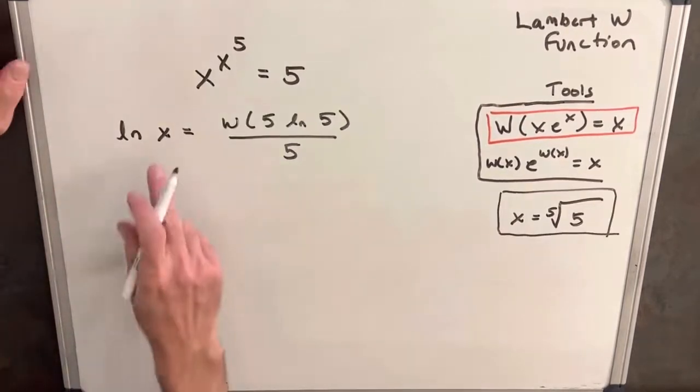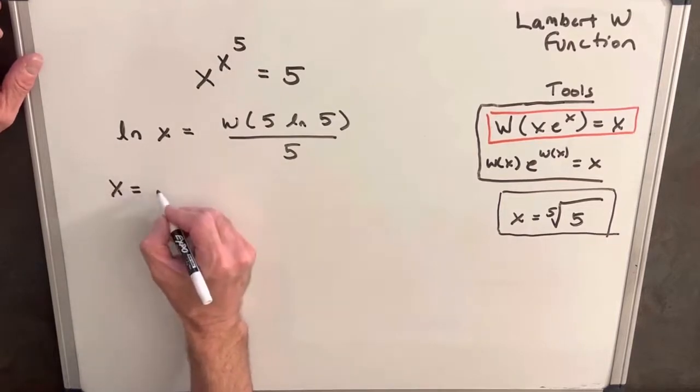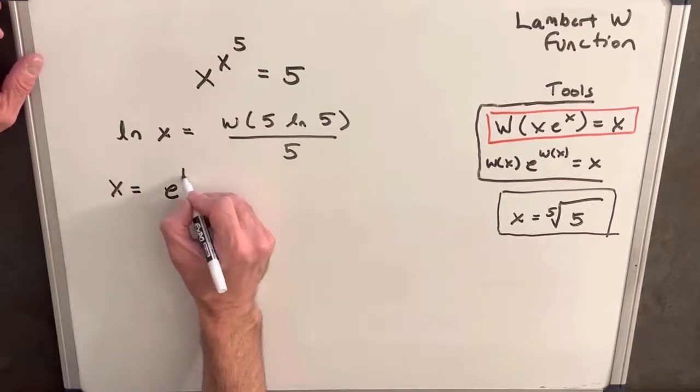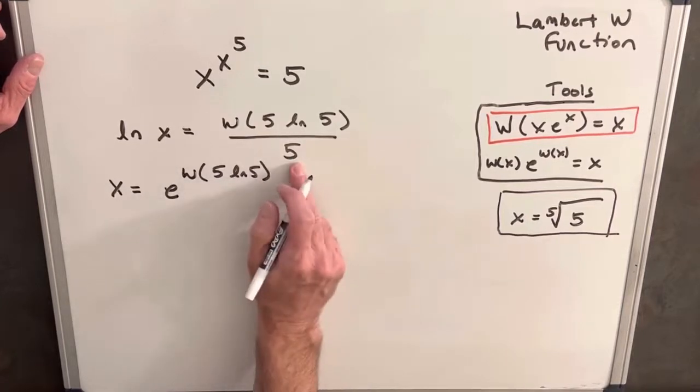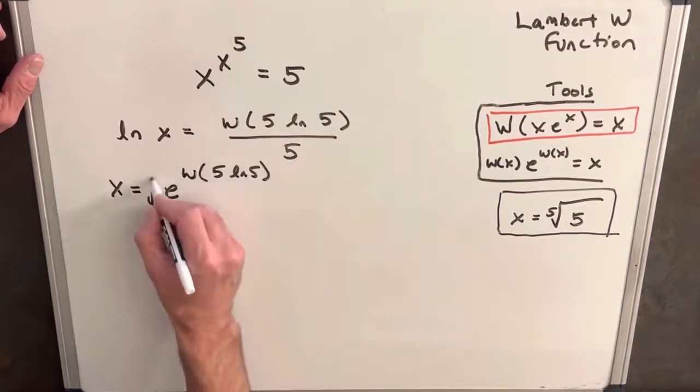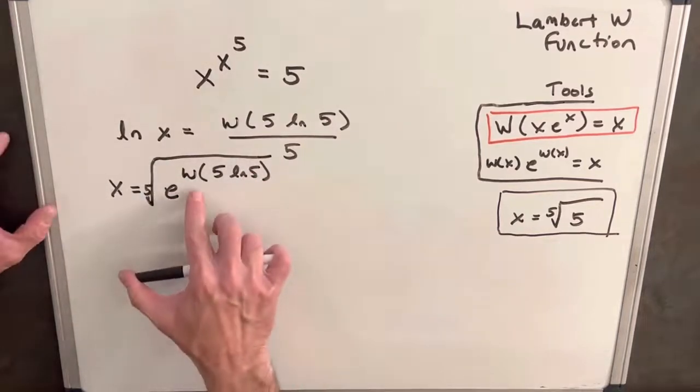Now just using the definition of natural log we can solve for x and say x is going to be equal to e to the W five ln five. And I'm going to take this five as a one-fifth and make it into a fifth root right here. It's pretty close right here, but what we can do is let's just look at this piece separately.